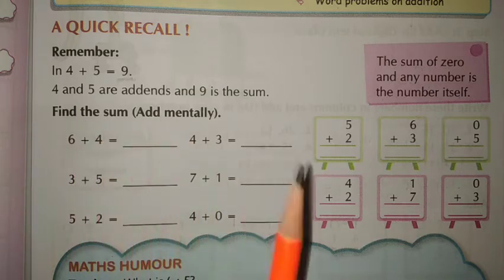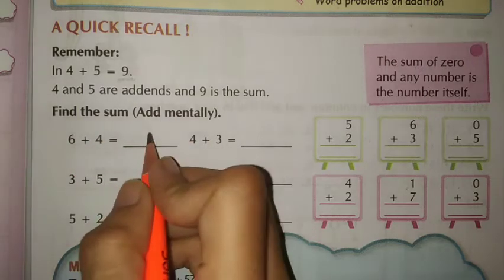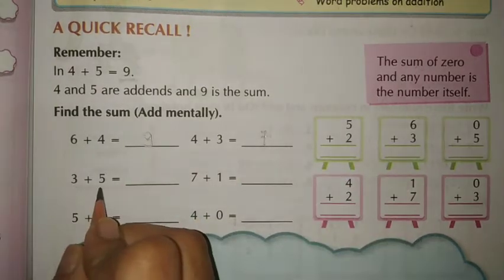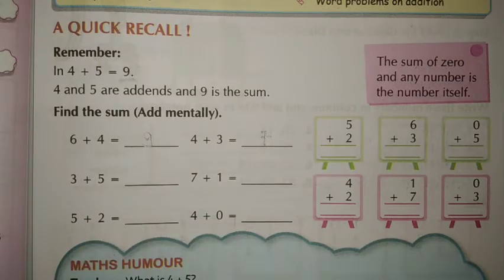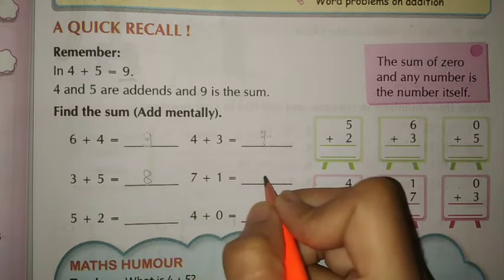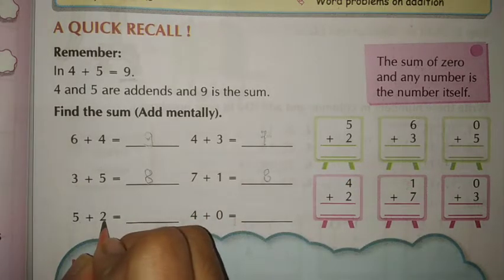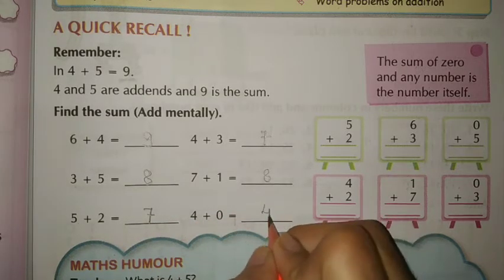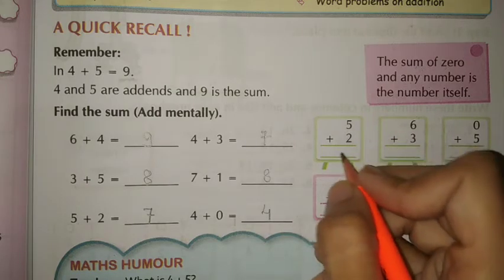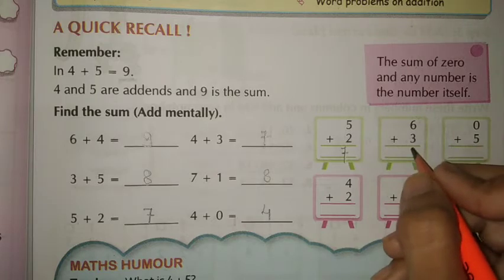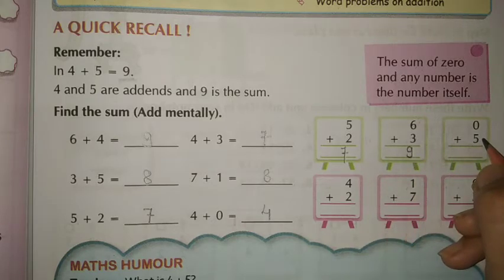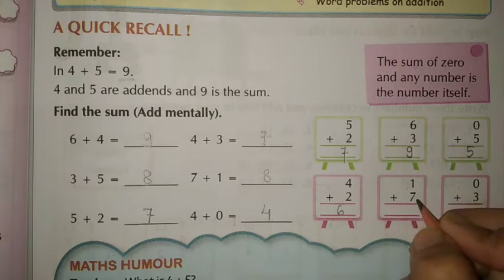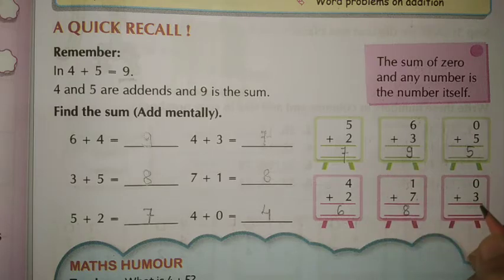Next, find the sum mentally. 6 plus 4 equals 9. 4 plus 3 equals 7. 3 plus 5 equals 8. 7 plus 1 equals 8. 5 plus 2 equals 7. 4 plus 0 equals 4. 5 plus 2 equals 7. 6 plus 3 equals 9. 0 plus 5 equals 5. 4 plus 2 equals 6. 1 plus 7 equals 8. 0 plus 3 equals 3.